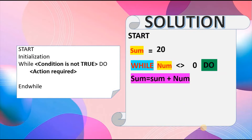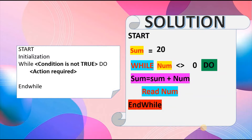We're saying: while the num (number collected from the user) is not equal to zero — the bracket symbols represent 'not equal to' — we're going to do a set of actions. First, we're provided with a formula to find the sum: sum equals sum plus num. So whatever is stored in sum will be added to whatever number the user enters. This is followed by reading the number the user enters. After that we end the while loop, and then print the sum of the numbers.